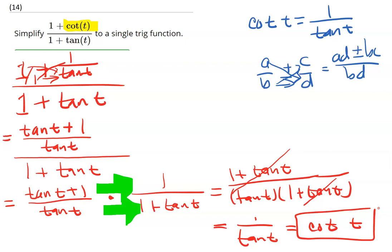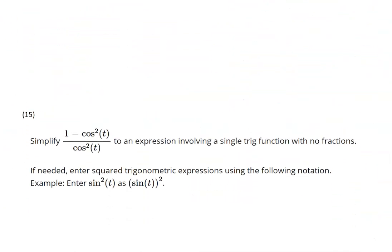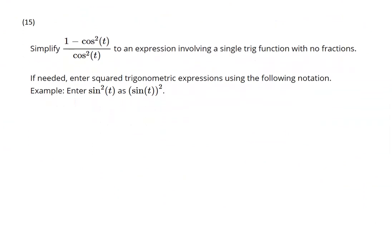To continue our talk, I want to go ahead and roll into number 15 because it's very similar. It says simplify to an expression involving a single trig function with no fractions. If needed, enter squared trigonometric expressions using the following notation. And so we're probably going to end up with some squared ones if they gave us that hint. And so first let's look at what we have to start with. We have 1 minus cosine squared t over cosine squared t.